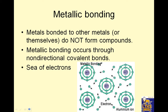The first type of bonding we're going to look at is metallic bonding. Metallic bonding is when you have a metal bonded to other metals or themselves. They do not form compounds. If it's formed with themselves, it's an element. If it's bonded to other metals, it's called an alloy, which is actually a mixture. Metallic bonding occurs through non-directional covalent bonds — it's often called a sea of electrons.